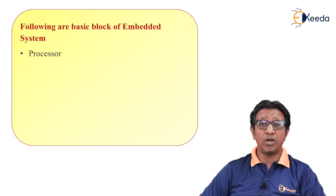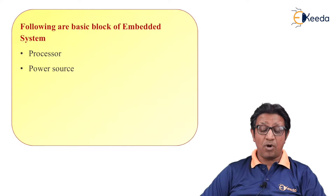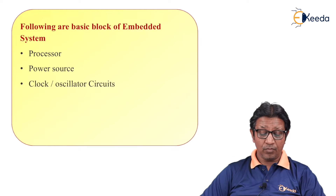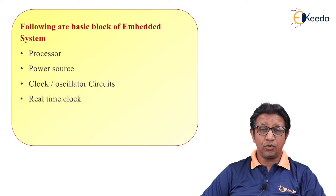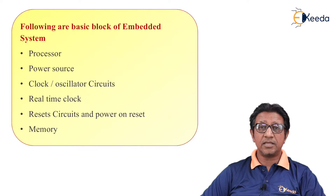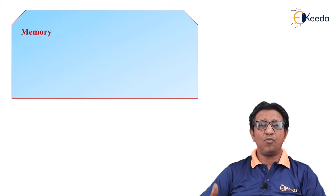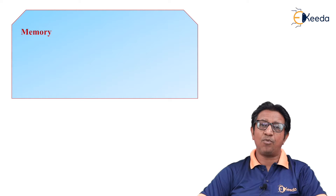The different blocks are: first is processor, second is power source, third is clock and oscillator circuit, fourth is real-time clock, fifth is reset and power-on reset, and sixth is memory. Now let's see one by one what these different blocks are.